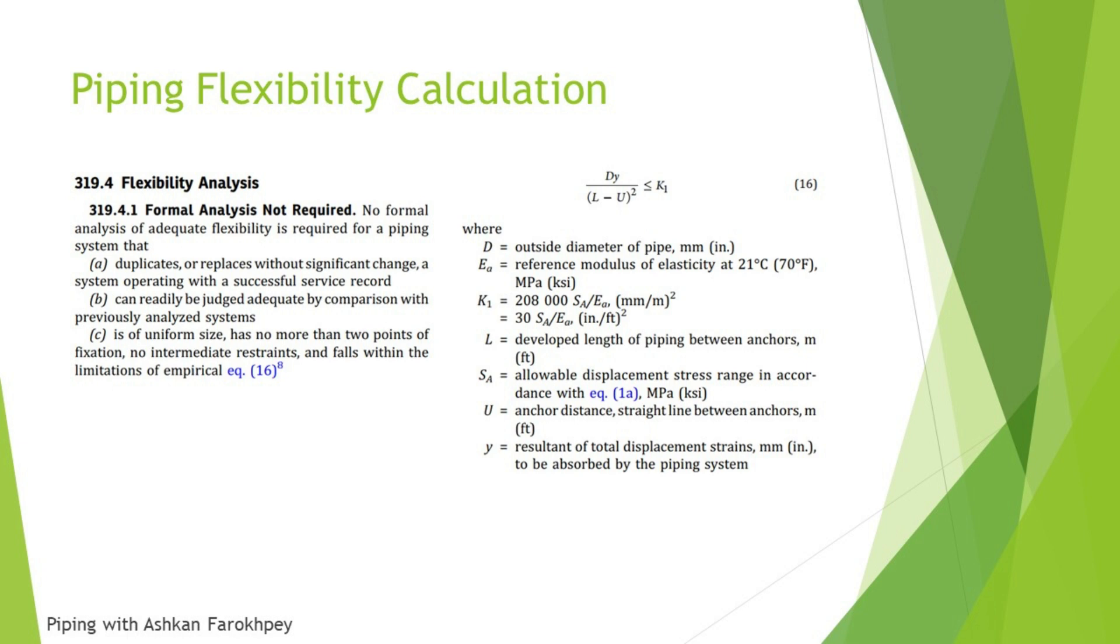In this formula we have different characteristics. The first one is D, which is outside diameter of the pipe. Y, which is resultant of total displacement restraints, which is in millimeters or inches. It is equal to all the displacements that your system has. The L, which is developed length of piping between anchors, and U, which is a straight line between the two anchors of your system. K1 is a coefficient that you can see is a proportion of SA to IA.